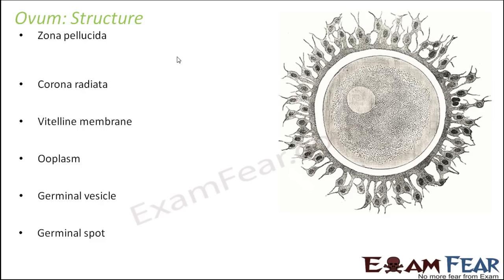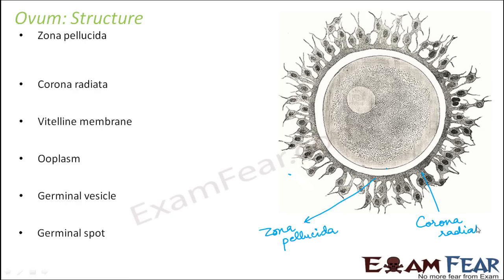Corona radiata is the outermost layer. Inner to corona radiata is the zona pellucida layer. Inside zona pellucida is the vitelline membrane. Sometimes the space between the vitelline membranes is also known as the perivitelline space.